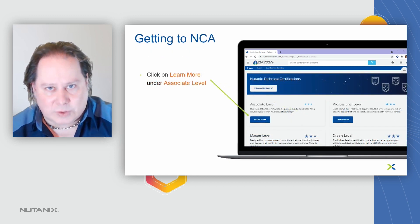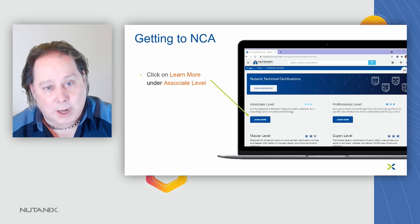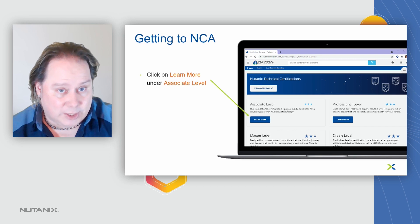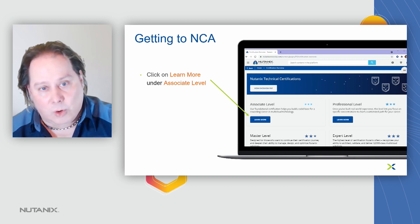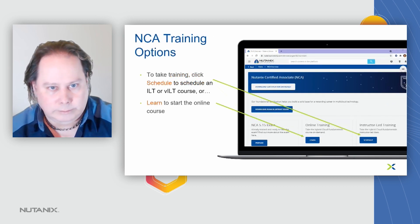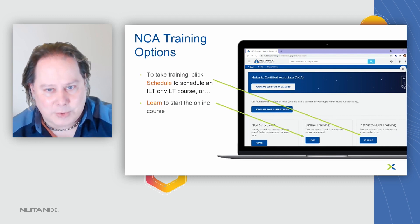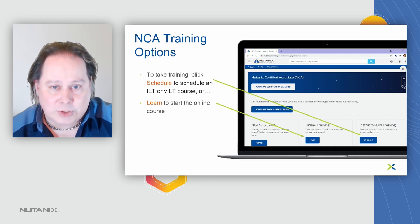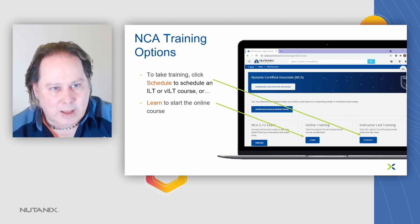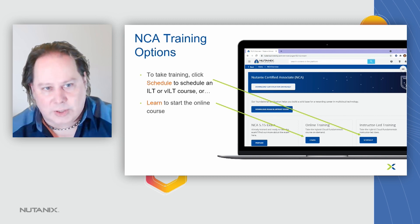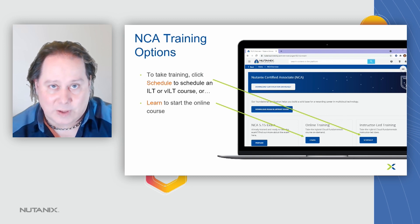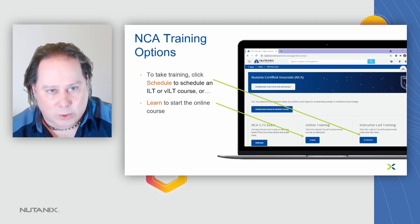You'll see the different levels of certification — associate, professional, master, and expert. Since we're talking about the Nutanix Certified Associate, click the Learn More button under the associate level. Once you get there, you'll be presented with both training and exam options. For instructor-led training, click the Schedule button; for online training, click the Learn button to start the online course.